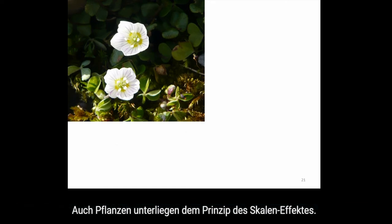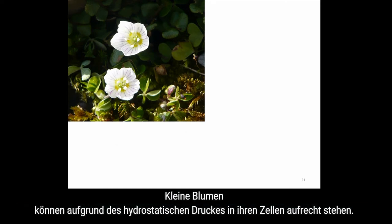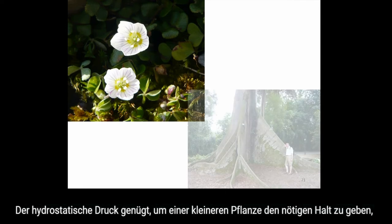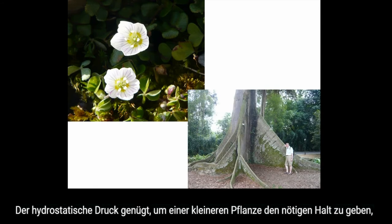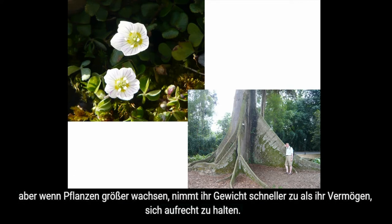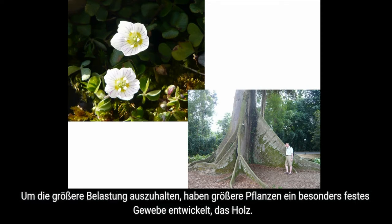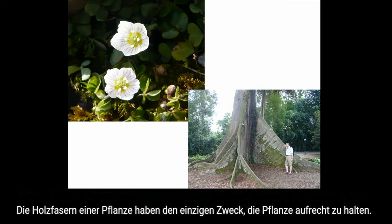Plants are also affected by their scale. Small flowers rely on the hydrostatic pressure of water within their cells for rigidity — by filling their cells with water, they form solid structures that can stand erect. The hydrostatic pressure system is adequate to maintain the rigidity of small plants, but as plants grow larger, their weight increases faster than their structural strength. To cope with the greater stress, larger plants have developed special high-strength tissue we know as wood, whose fibers have the sole function of keeping the plant rigid.